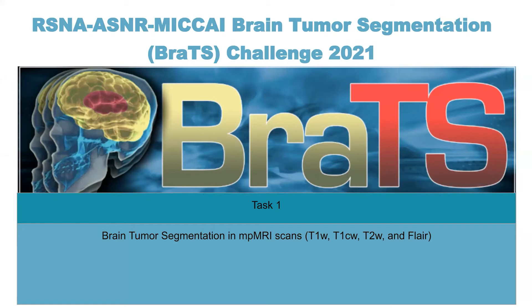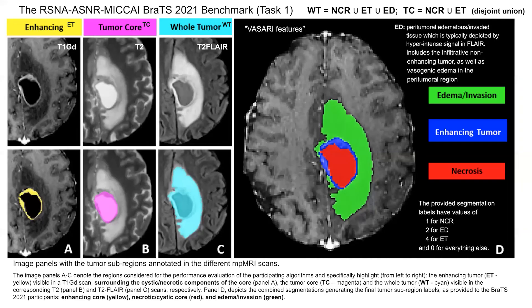The performance score is evaluated over three partially overlapping regions: enhancing tumor, tumor core, and whole tumor. The enhancing tumor, highlighted in yellow in panel A, is quite visible in T1 contrast MRI recordings. The tumor core, highlighted in magenta in panel B, is visible in T2 recordings. The whole tumor — the masked region of tumor core and edema — is highlighted in magenta in panel C. The edema is typically depicted by hyper-intense signaling in FLAIR recordings.